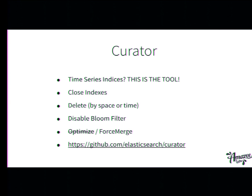The bloom filter is used when you index data. Since we have time series indexes, you won't use that filter on indexes older than a day because you won't enter data there — so you can easily disable them. You can optimize, or in Elasticsearch terms do a force merge. I did it once and it used a lot of RAM and CPU and didn't change a lot, so I don't use it. It's all in GitHub — it's a script you can run with really nice outputs. Curator is perfect for time series indexes — don't try to build your own.